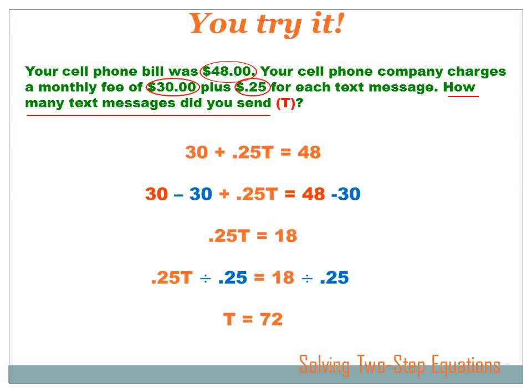Now I'm down to a one-step equation. .25 times T equals 18. To get rid of .25 times I divide by .25. And I've got to divide by .25 on both sides of the equation. So now the left reads just T. And the right is 18 divided by .25 which is 72.